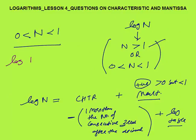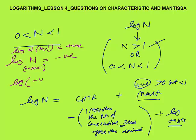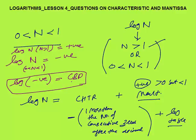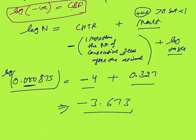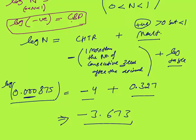An important concept: log n can be negative when n lies between 0 and 1; otherwise it is always positive. Log 1 = 0. You can't determine the log of a negative number — that is different from the log value being negative. Characteristic is always an integer (negative in this case) and mantissa is always a positive fraction between 0 and 1.